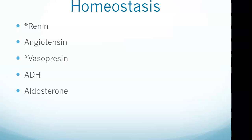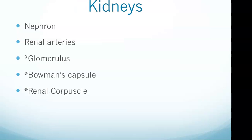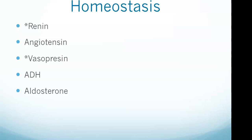The renal corpuscle is the filtration unit of the kidney. Blood enters the renal corpuscle through the afferent arteriole, is filtered through the network of capillaries — the glomerulus — and exits through the efferent arteriole.